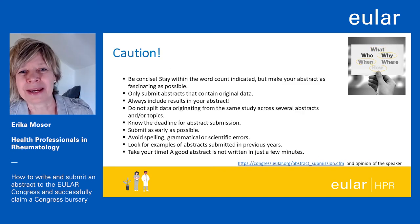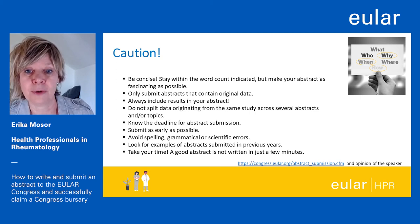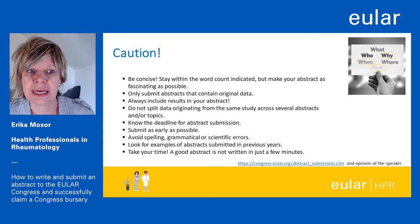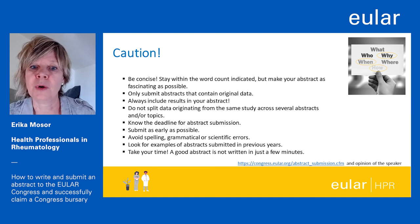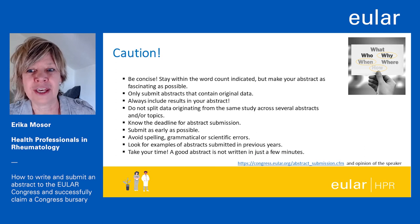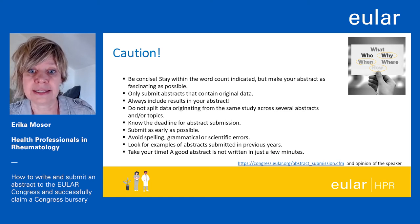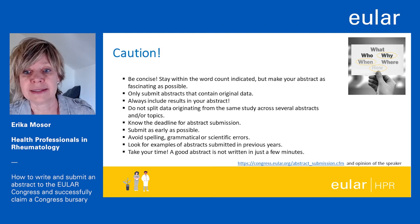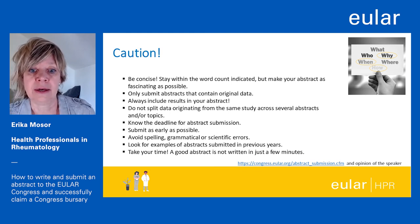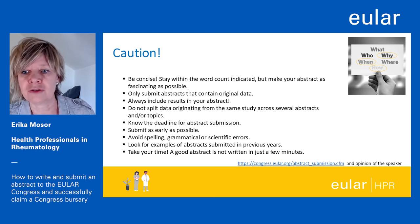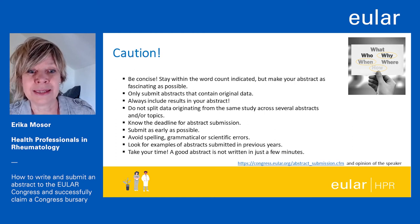Let me now give you some practical tips for writing an abstract. An abstract should be concise but informative, so avoid using words or phrases that do not add any specific value to your research. Keep the sentences very short and crisp to convey just as much information as needed. And most importantly, fascinate people with your abstract. Only submit abstracts that contain original data — this is very important — and always include results in your abstract. Don't use the future tense telling people what you want to do, but rather what you did. Do not split data from the same study across several abstracts or different topics, as it will lead to rejection of all the abstracts. It's also necessary to know the deadline for abstract submission.